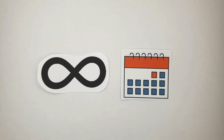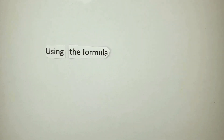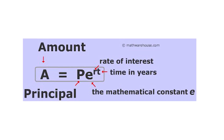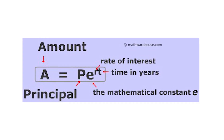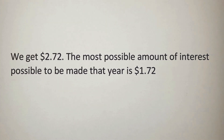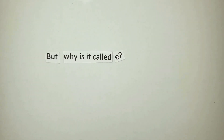Now, what if it is compounded an infinite amount of times over the year? This is where e comes in. Using the formula A = P × e^(rate × time), we get $2.72 — the most possible amount of interest that can be made that year, which is $1.72 in earnings.